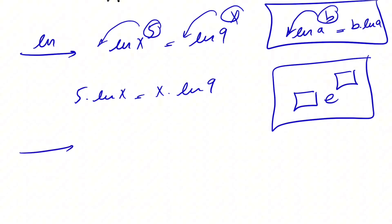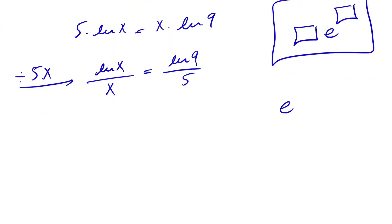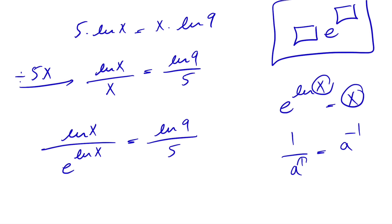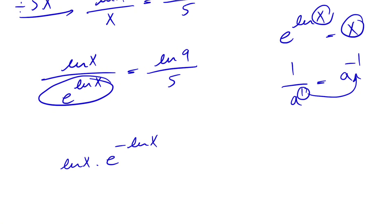Keeping that in mind, we're going to keep ln(x) and x on one side and all constant values on the right side. Dividing by 5x, on the left side we get ln(x)/x and on the right side we have ln(9)/5. We know e^(ln x) = x, so we can write ln(x) over e^(ln x), and since 1/a = a^(-1), the e moves to the numerator as a negative exponent. This gives us ln(x)·e^(-ln x) = ln(9)/5.